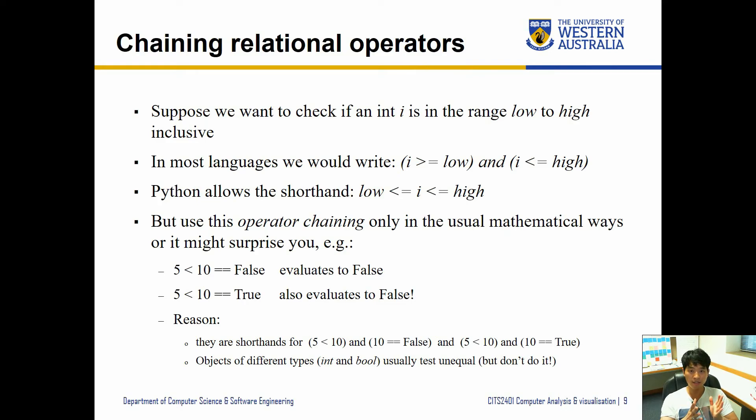Five less than 10 is false - it's false. Five less than 10 is true is also false. We can confirm this is the case. Why does this happen? Because they are shorthand for 5 less than 10 and 10 equal equal false, and vice versa. So the second expression is 5 less than 10 and 10 equal equal true. What's happening here is we are comparing 10 with a boolean. Normally if you check whether objects of different types are equal, it will result in false. So don't just trust expressions, especially mixing types - do double check that your expressions return what you expect.